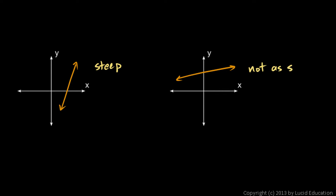And in each case, there would be a number associated with the line, and it would be a bigger number for a steeper line. So that's all slope is. It's a number that tells us how steep a line is.